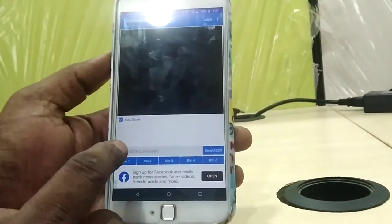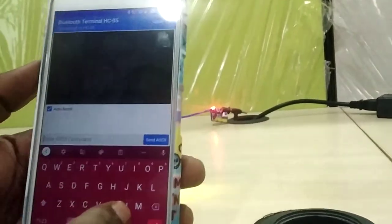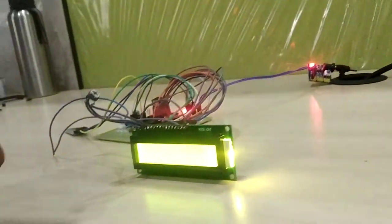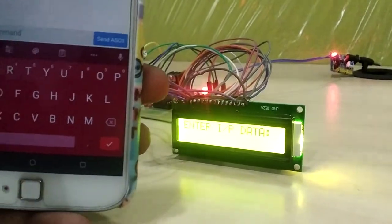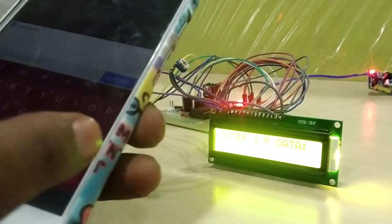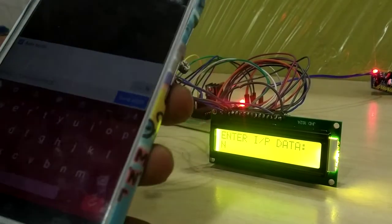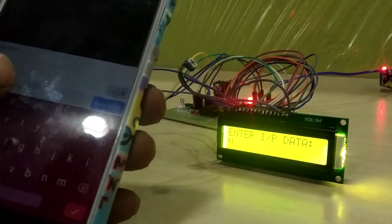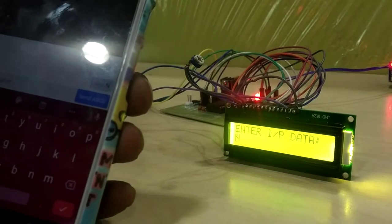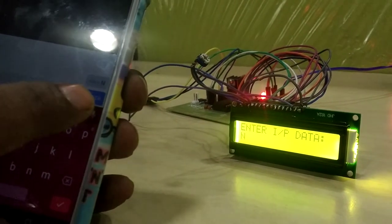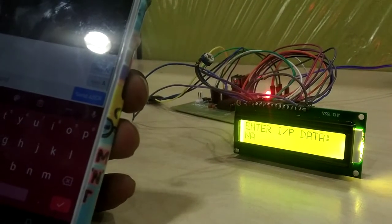Now I am giving a character N from the mobile phone and send ASCII. You will get a proper character on the screen. Again, I am giving new character A.